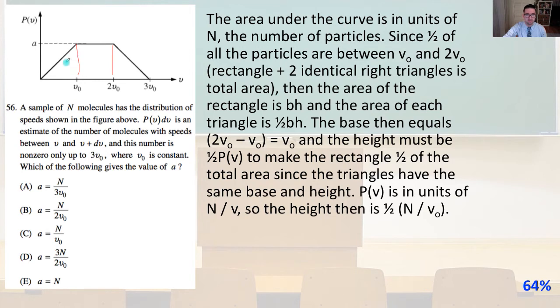Since one half of all the particles are between v_0 and 2v_0, we have a rectangle plus two identical right triangles is the total area. Then the area of the rectangle is the base times the height, where we know the base, and the height is a. The base then equals 2v_0 minus v_0, which just equals v_0, and the height must be one half P of v to make the rectangle one half of the total area, since the triangles have the same base and height.